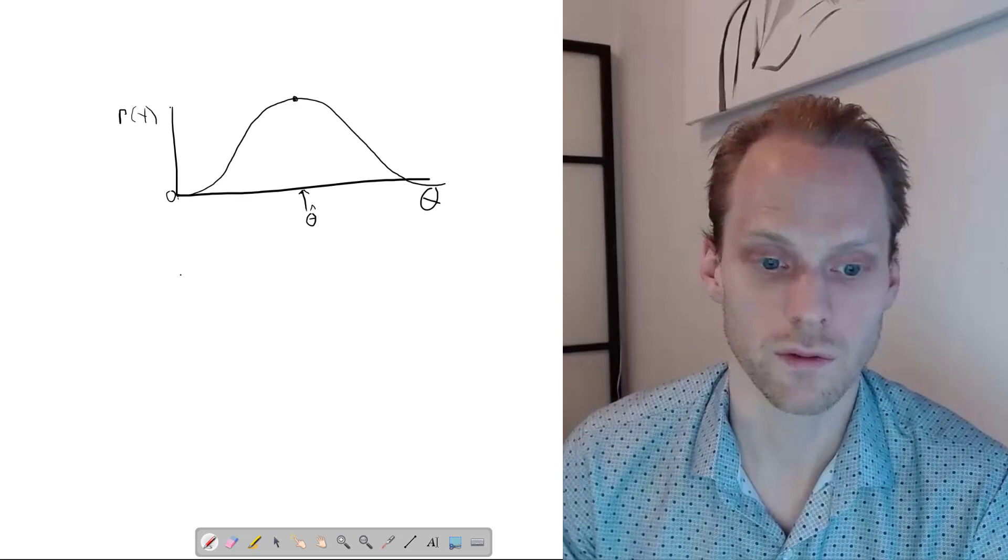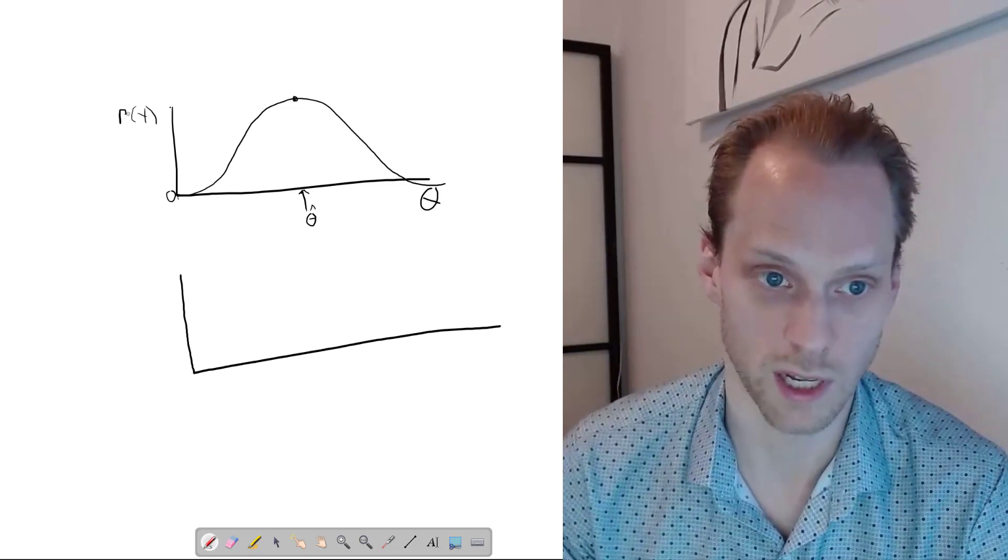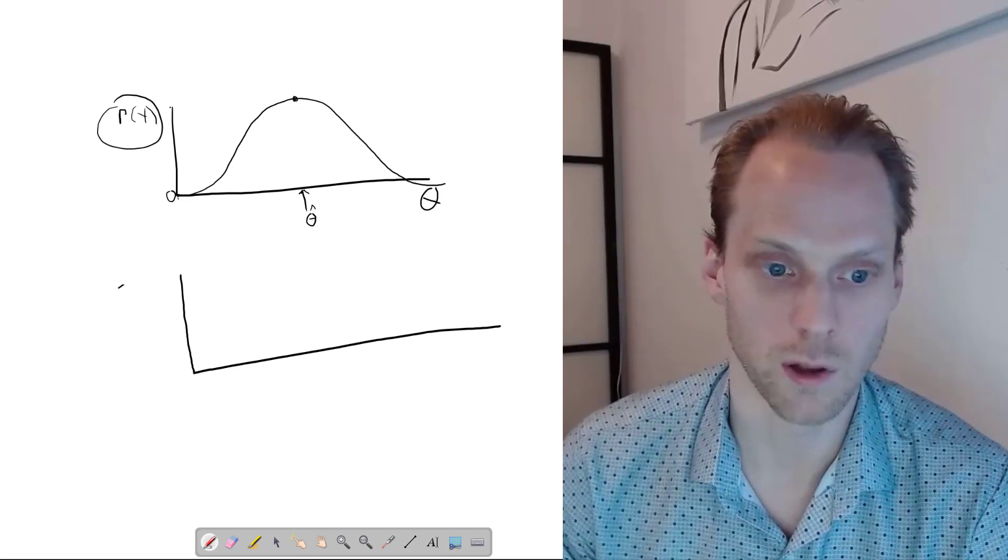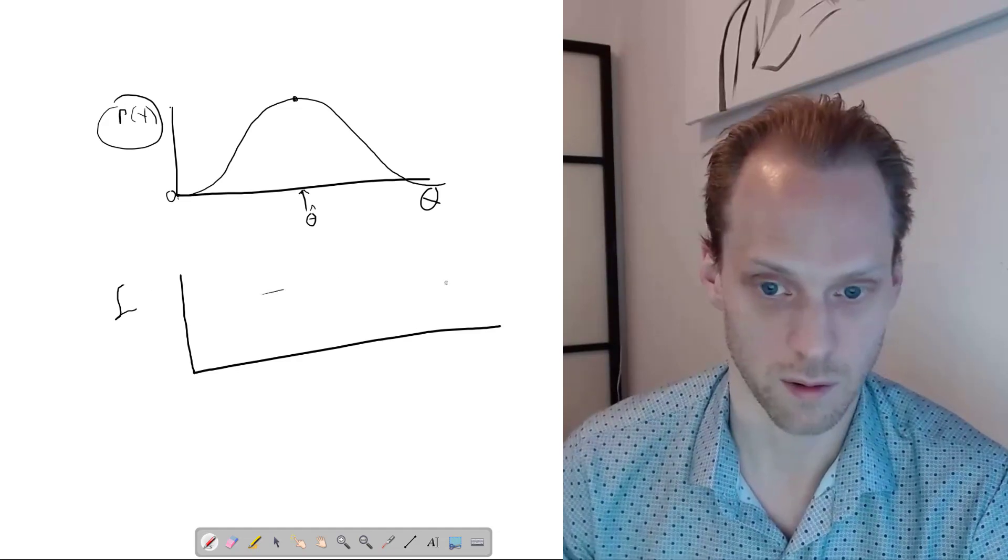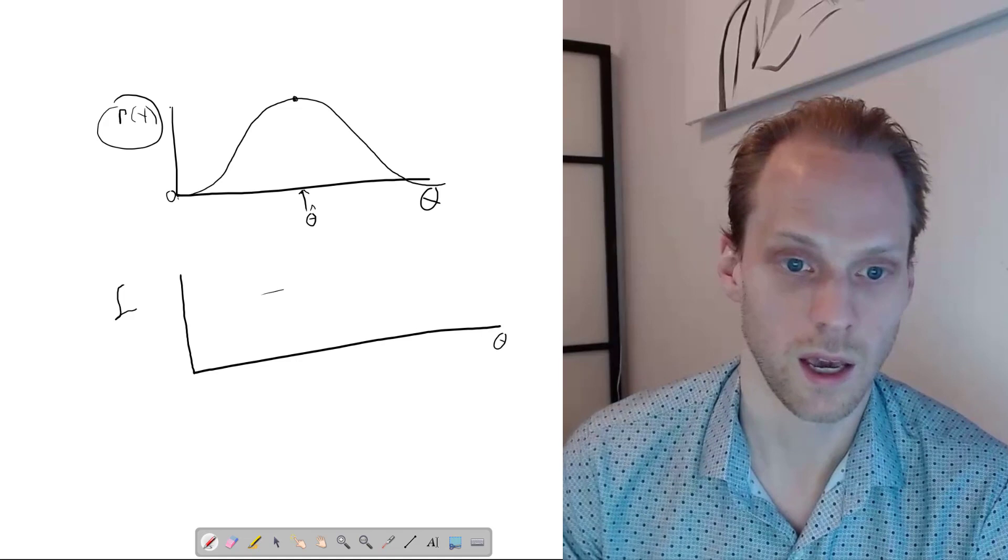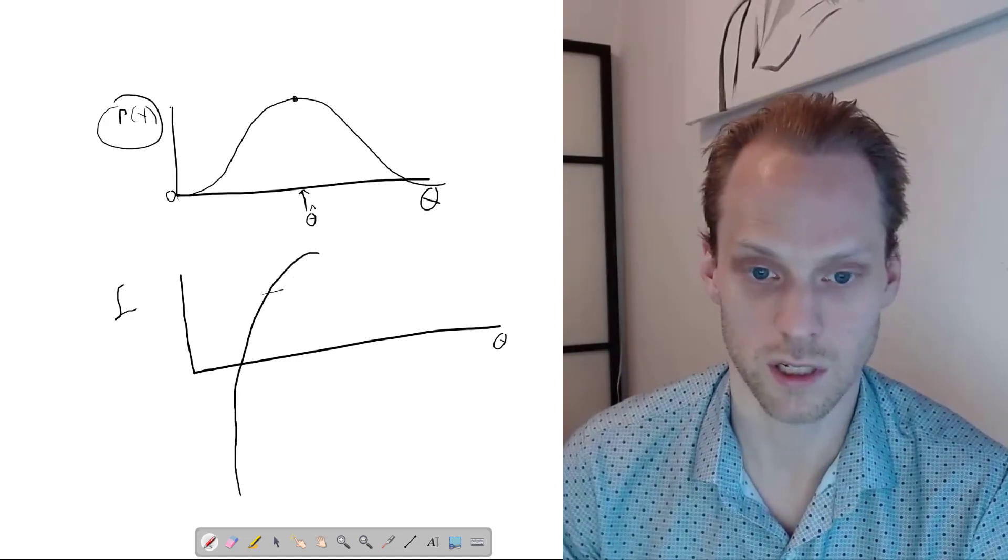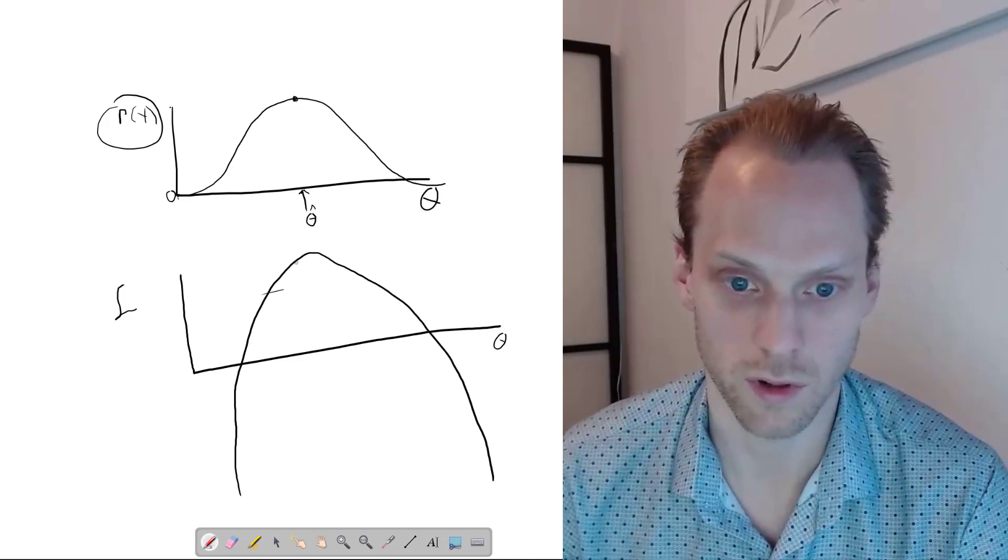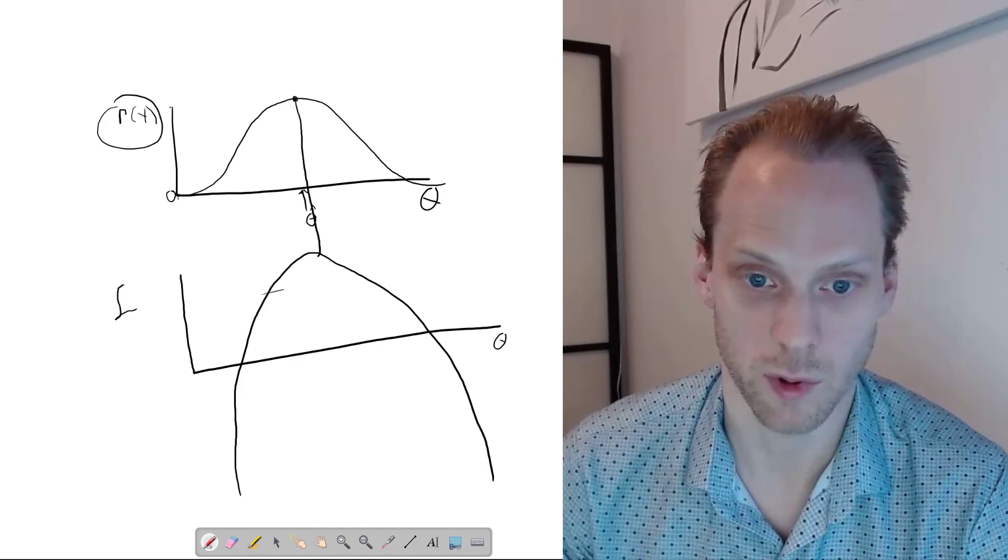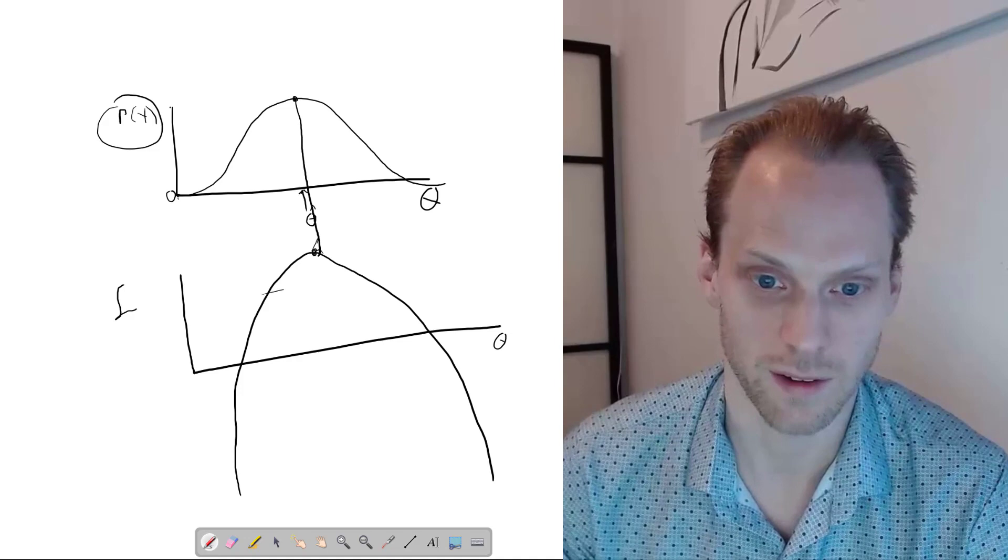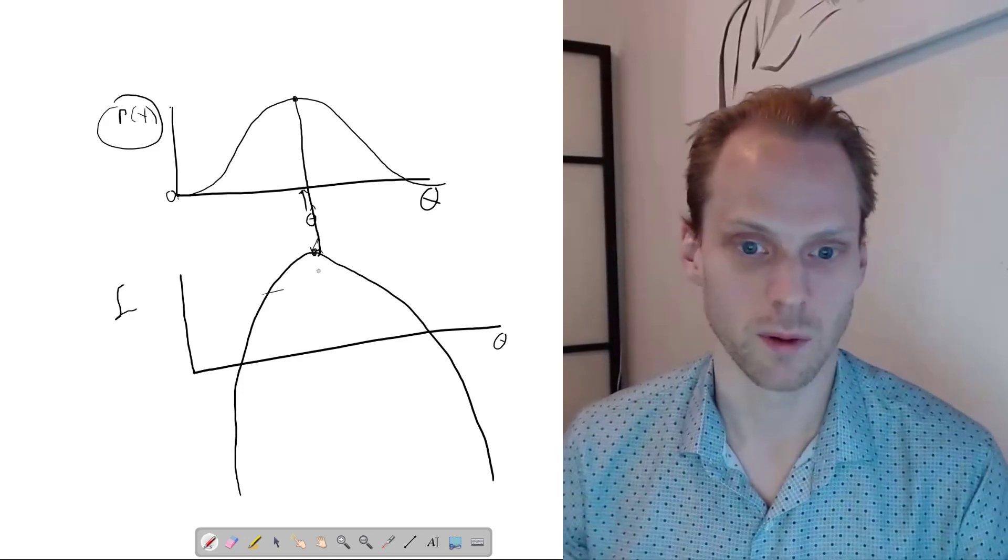There's one slight difference that what we do is we don't optimize the likelihood itself, but we usually optimize the log likelihood, which is logarithm of this, as a function of theta. And this axis has the same shape, but it doesn't stop at zero, so usually it's more like this, something like that. I'm not that good at drawing. But the point is that the maximum point is exactly the same point. So that's really the idea behind maximum likelihood estimation.